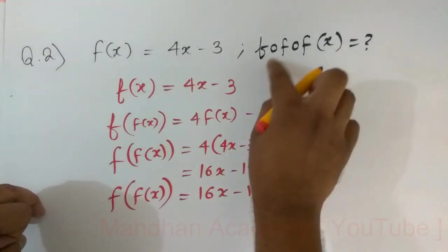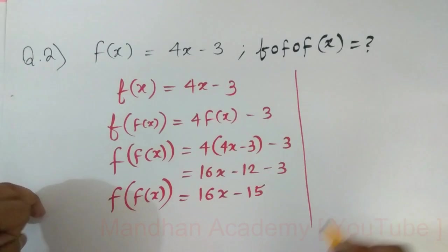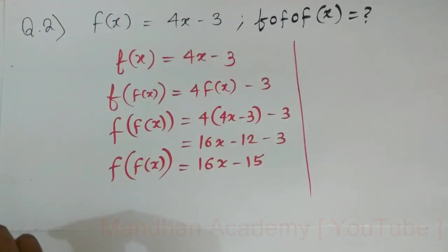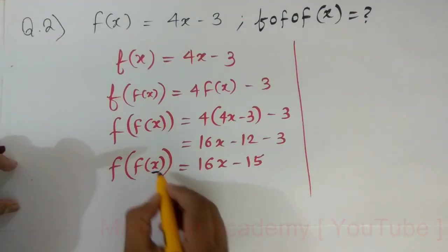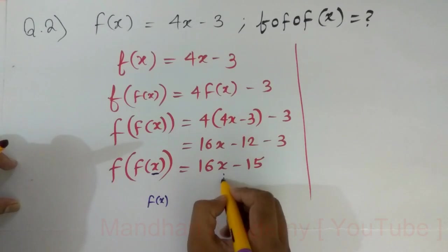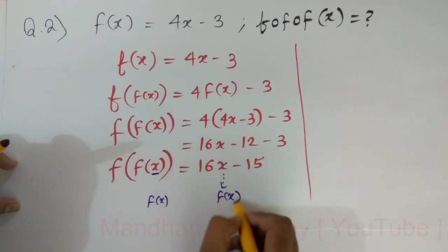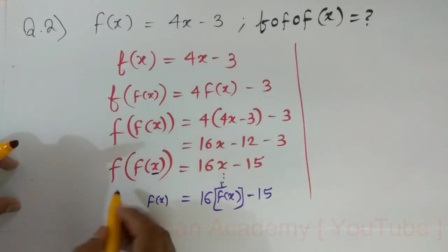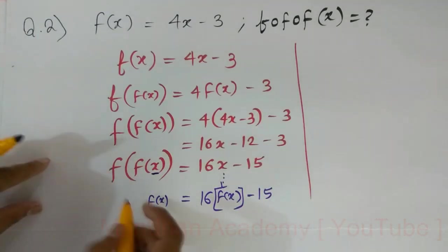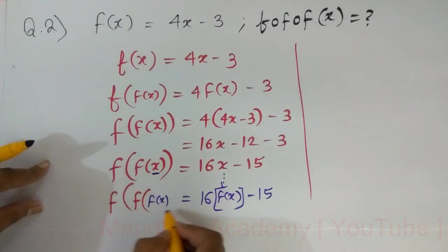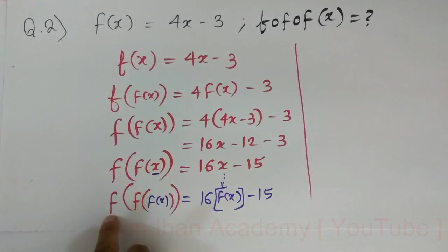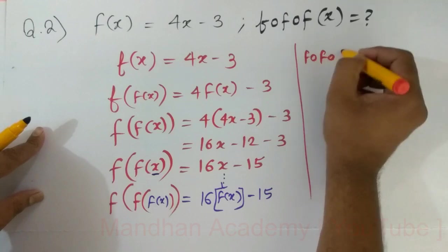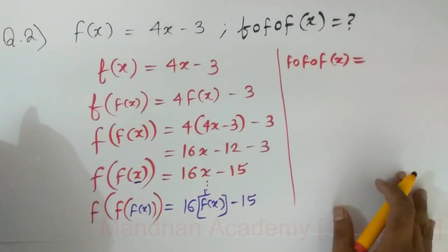But again we want f of f of f of x. That's why we resubstitute f of x in place of x. In every place of x I am going to substitute f of x. So it would become 16 times f of x minus 15. This becomes f of f of f of x.